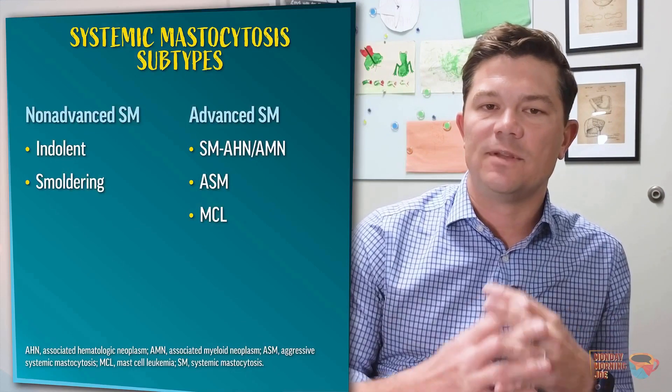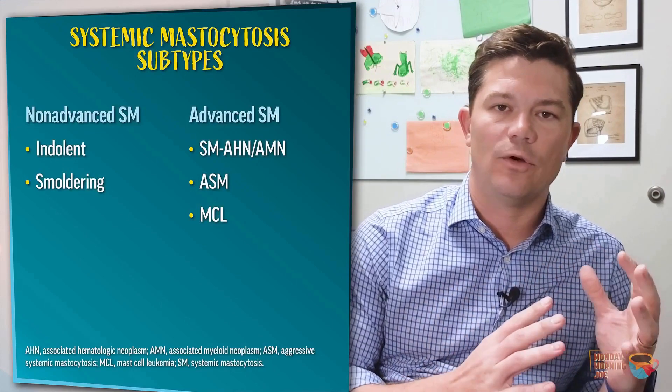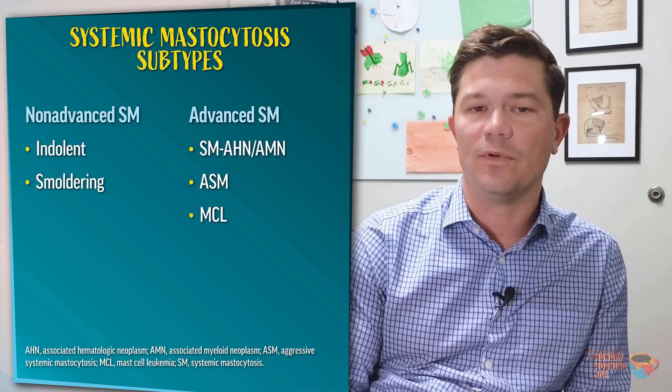So what is systemic mastocytosis, or SM? It's a heterogeneous group of diseases that can be separated into either advanced or non-advanced systemic mastocytosis. By far the most common presentation is non-advanced systemic mastocytosis, which comprises 80% to 95% of cases. Within this, you have the most common form, indolent systemic mastocytosis or ISM, and then the somewhat more rare smoldering systemic mastocytosis. A subset falls into advanced SM, which is somewhere between 5% and 20% of cases.